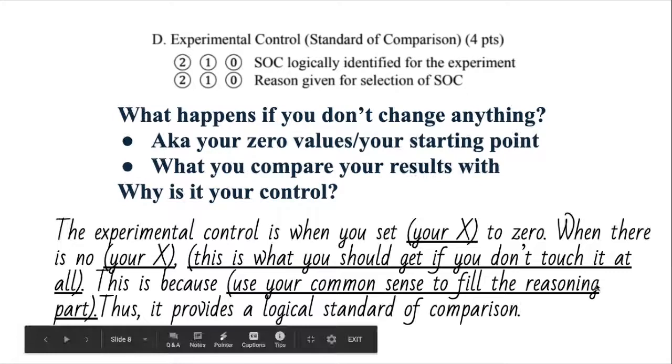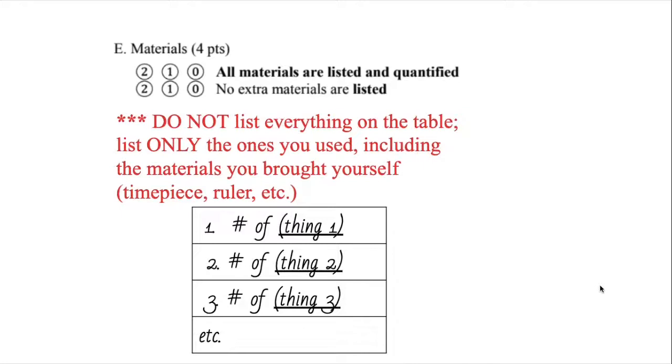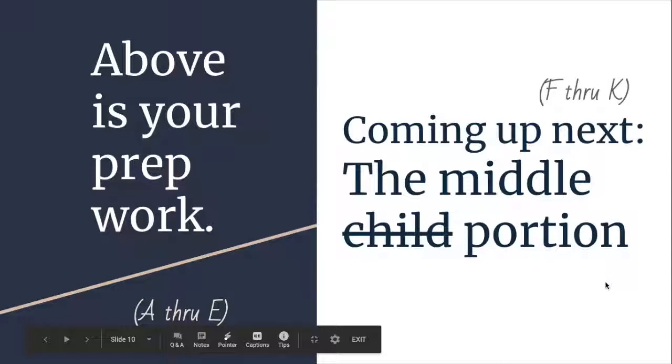And then materials. Materials should also be a quick thing. They're going to give you like a bunch of stuff on the table, but you don't have to use all of them. Only list the ones that you used, including the materials you brought yourself. Timepiece, ruler, etc. Make a list out of it. And then it also tells you to quantify all your materials. So if you're using 10 washers in total, say 10 washers instead of just washers. Things like that. No extra materials listed. Just make sure that you are exactly on point. And then move on.